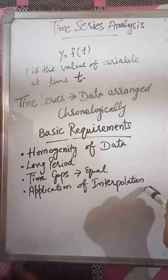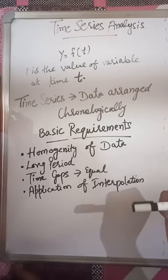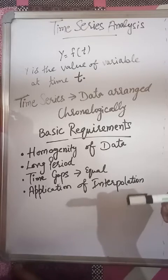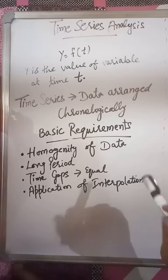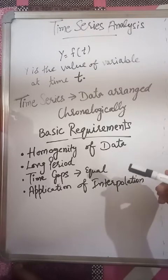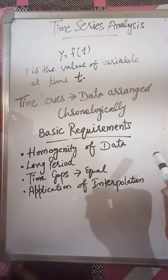Application of interpolation means that in case some year's data is missing, we can interpolate the value based on other years' data. We can write a probable value. So we need to apply interpolation so that time gaps remain equal and data homogeneity is maintained with a consistent pattern. These are some conditions for time series.